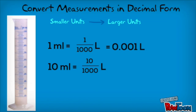Now to convert 10 milliliters to liters, I must find 10 divided by 1000, which is my conversion rate. 10 divided by 1000 equals 0.01. So 10 milliliters equals 0.01 liters.